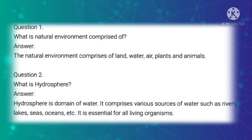First question: What is natural environment comprised of? Answer: The natural environment is comprised of land, water, air, plants and animals. Second question: What is hydrosphere? Answer: Hydrosphere is a domain of water. It comprises various sources of water such as rivers, lakes, seas, oceans, etc. It is essential for all living organisms.